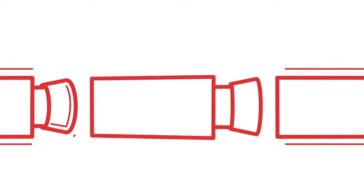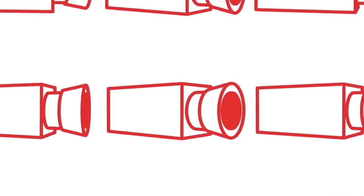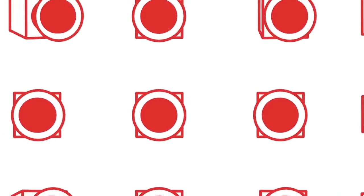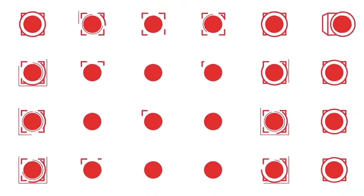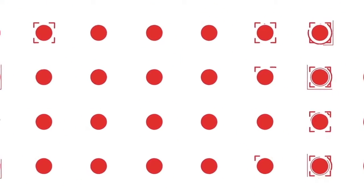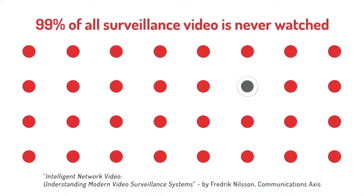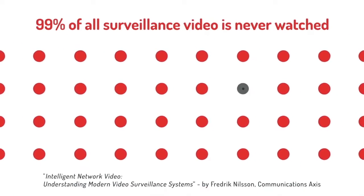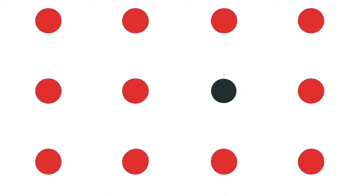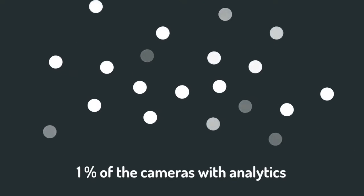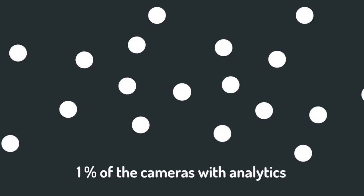Today, millions of surveillance cameras are deployed with little to no analytics, making it impossible to monitor them for real-time events. This means more than 99% of all surveillance video is never watched by anyone. Out of the 1% of cameras with analytics, an even smaller percentage of events can be detected.